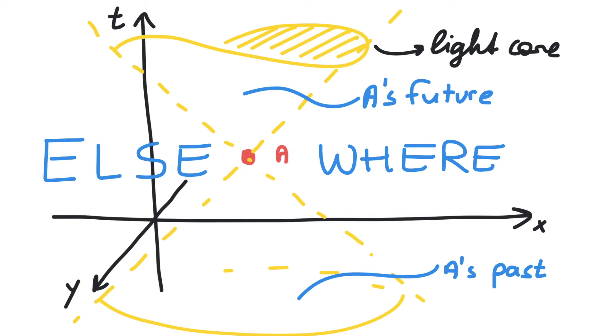So let's recap. After drawing the light cone, we know that A can have an effect on everything inside its future. Everything in A's past could have had an effect on A, and any event elsewhere cannot interact with A in any way.